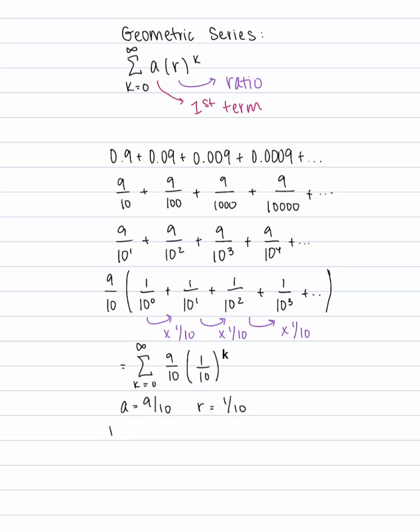Now when does a geometric series converge? It's when the absolute value of the ratio is less than 1. So in our case, our series is going to converge.